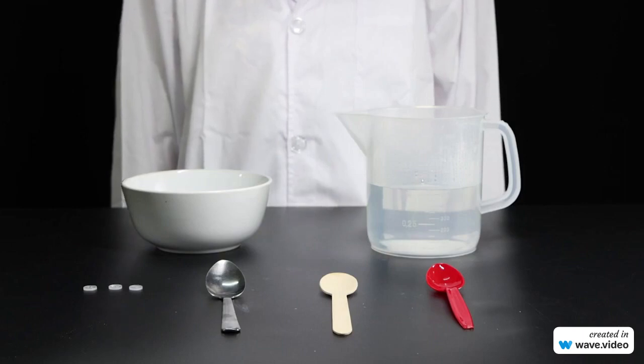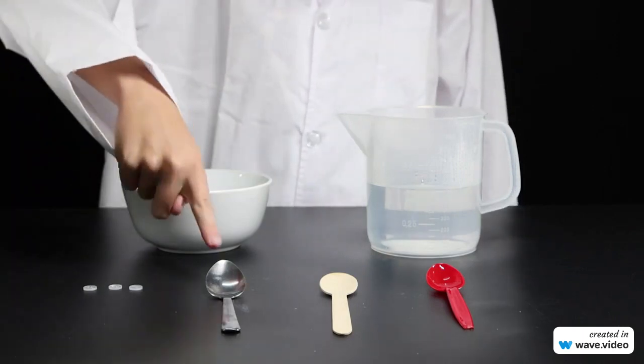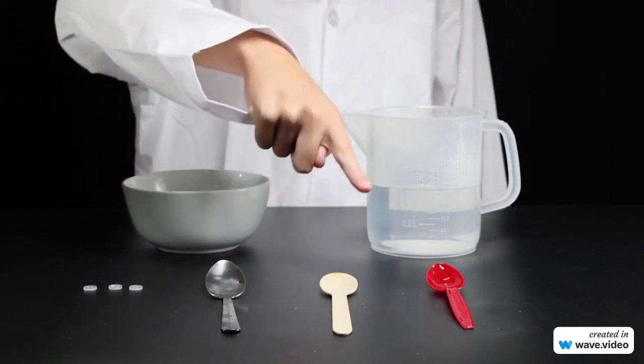Here we have three spoons of similar size. There's a metal spoon, wooden spoon, and plastic spoon.